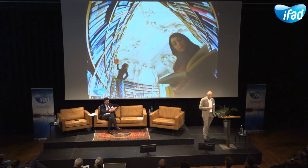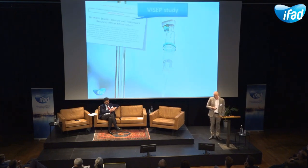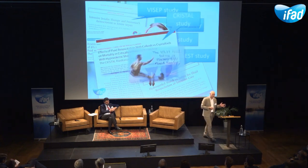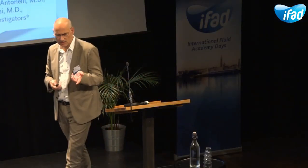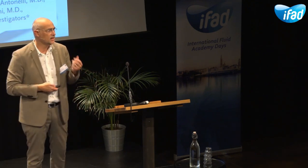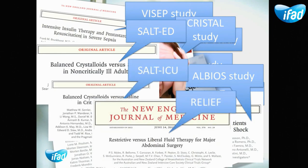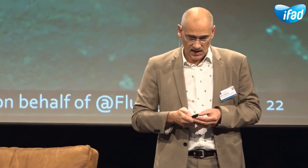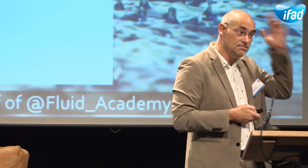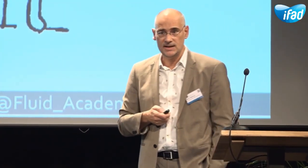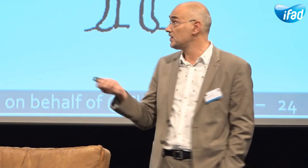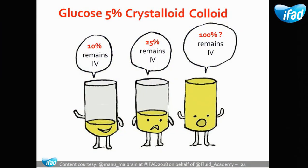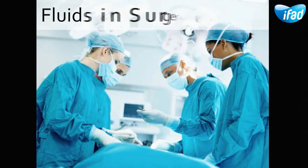What does the literature tell us? We've heard about studies like the VICEP study, CHEST, a lot of confusion. Then came the CRYSTAL study, the SPLIT trial, the ALBIOS trial — more confusion. More recently, we had the balanced crystalloid trials: SALT-ED, SALT-ICU, and the RELIEF trial. All of this creates a lot of confusion, like a battle between good and bad that may become religious. The bottom line: we should not give hypertonic solutions like glucose 5% for resuscitation, as only 10% remains in the intravascular space. Crystalloids are about 25%, and colloids — there is a lot of debate about whether they stay in the intravascular compartment 100%.